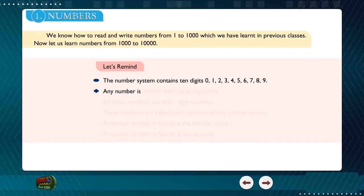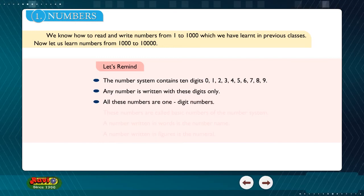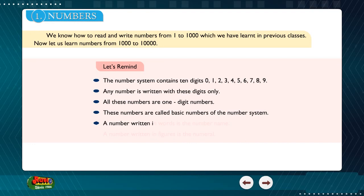Any number is written with these digits only. All these numbers are one-digit numbers. These numbers are called basic numbers of the number system. A number written in words is the number name. A number written in figures is the numeral.